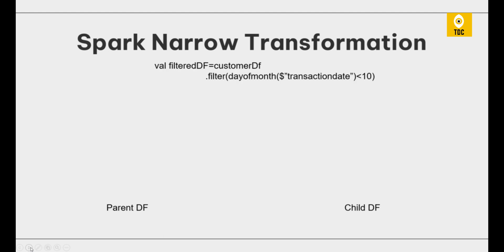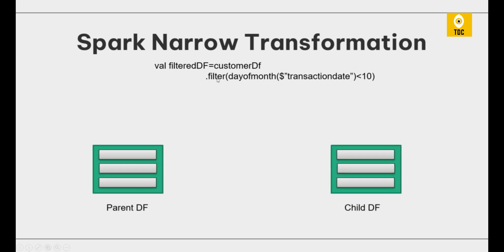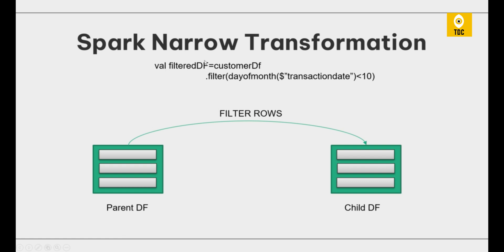When you apply a Spark narrow transformation — such as a filter — you have a parent data frame and a child data frame derived from it. For example, applying a filter like 'transaction date less than 10' on the parent data frame produces the child data frame, which holds the filtered records from the parent.